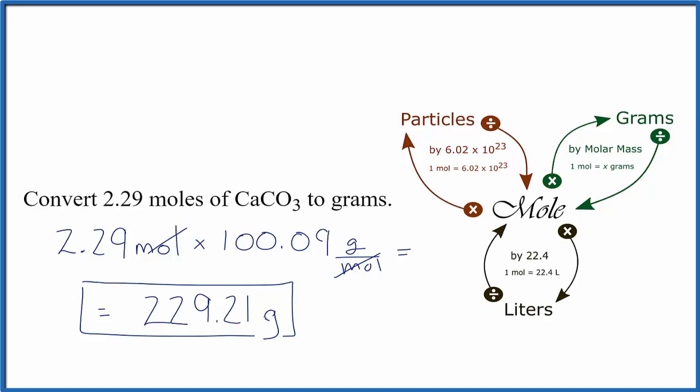If we were given grams and asked to find moles, that would just be the reverse. We'd have our grams, and instead of multiplying, we divide to get moles, and we divide by the molar mass of calcium carbonate.